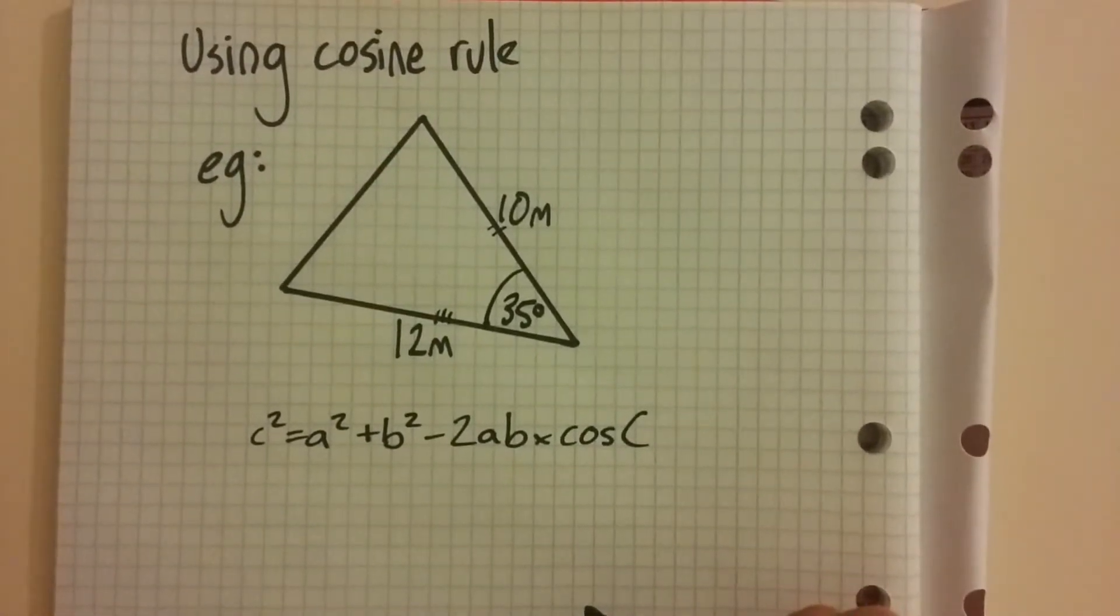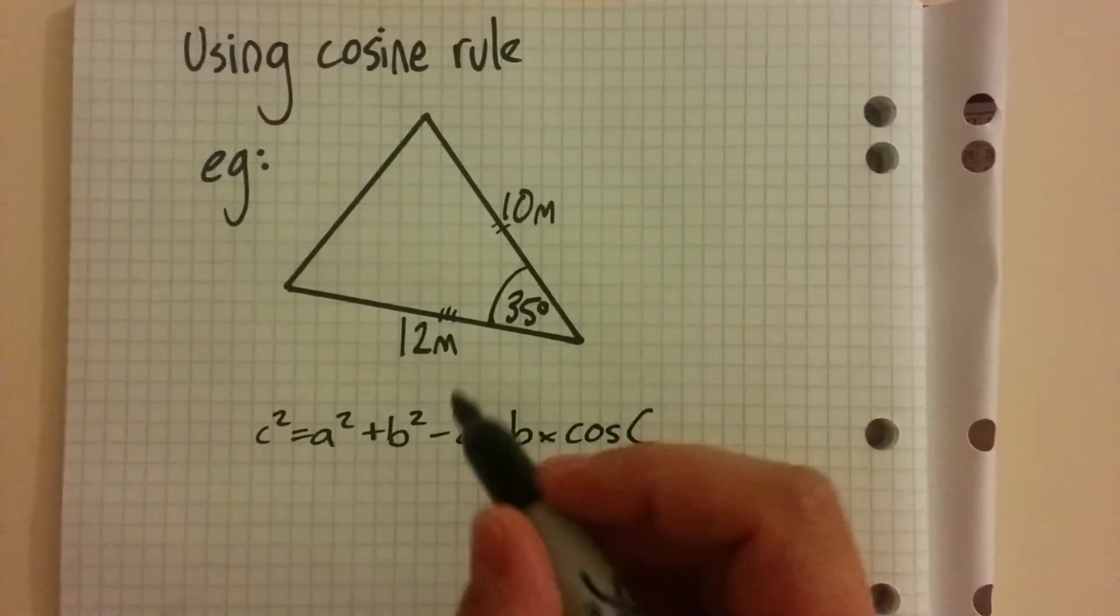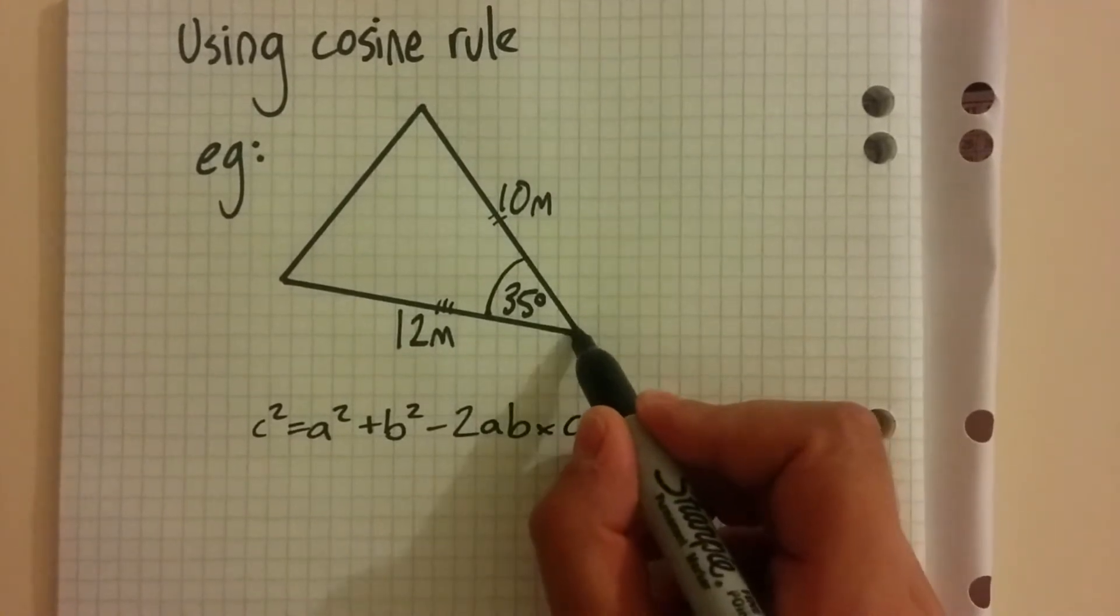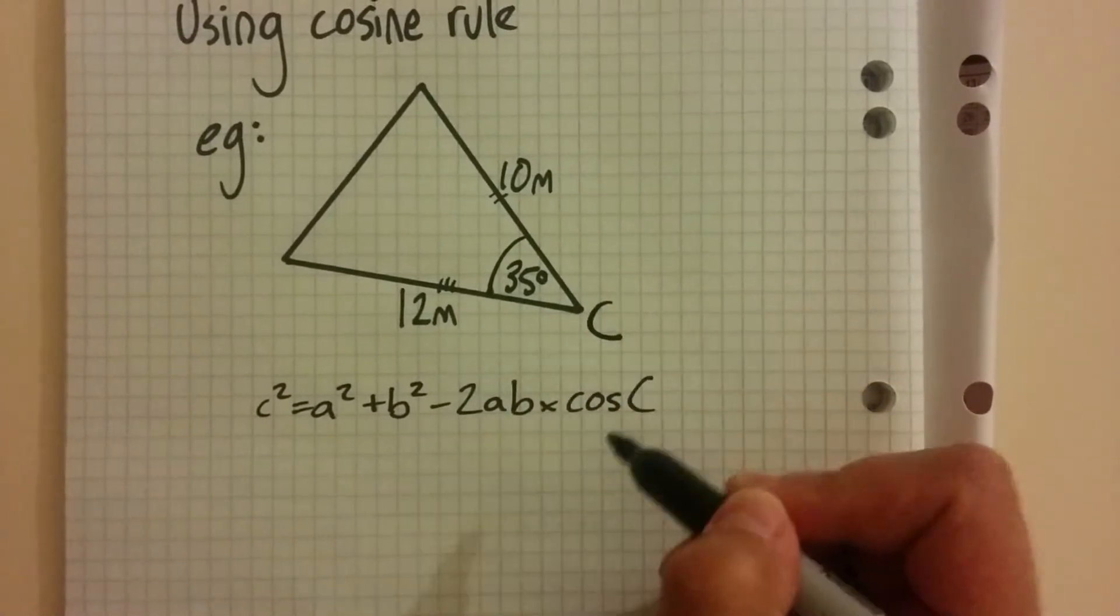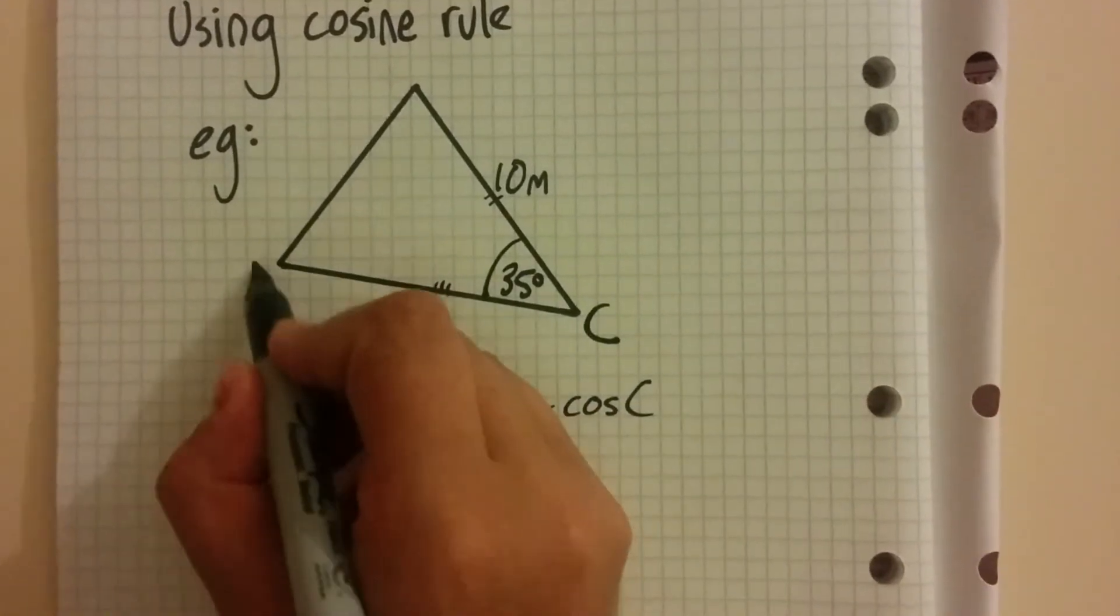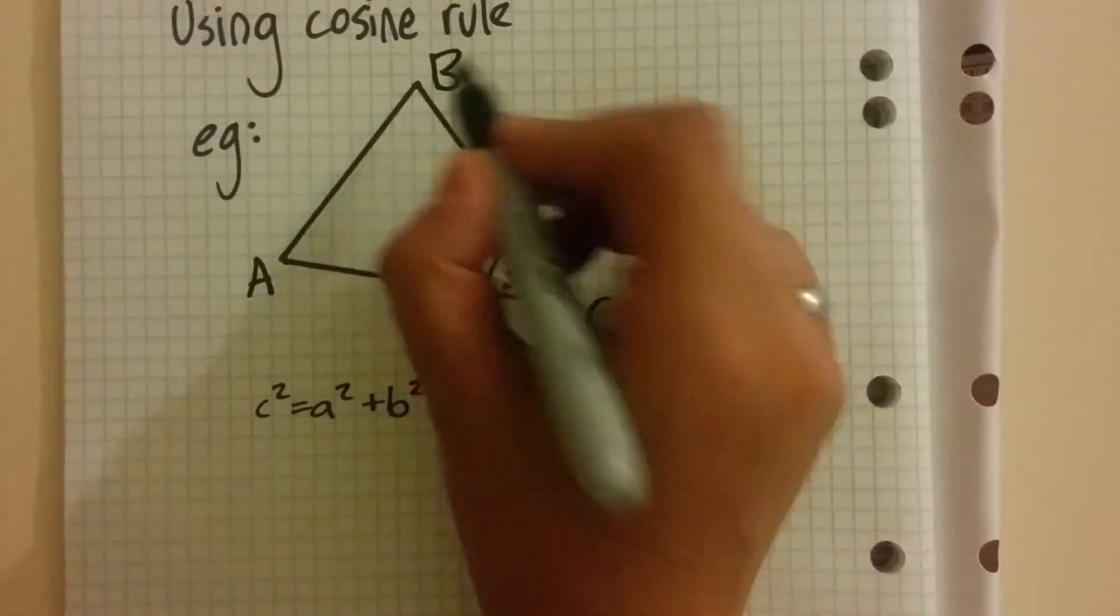Remember that we label our triangles with a capital letter on each vertex. Choose to let the known angle be C, then the other two can be A and B.